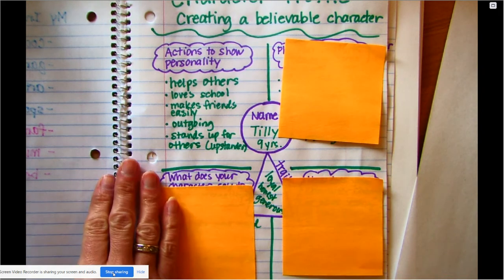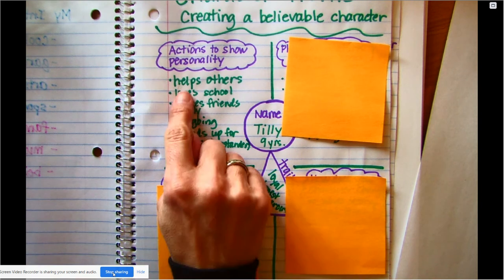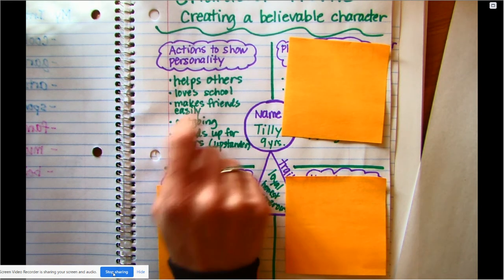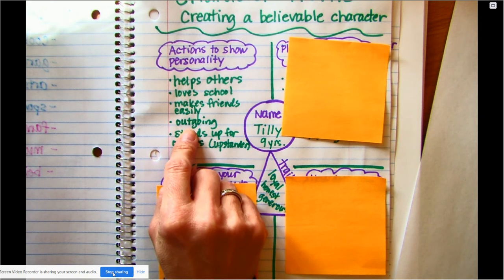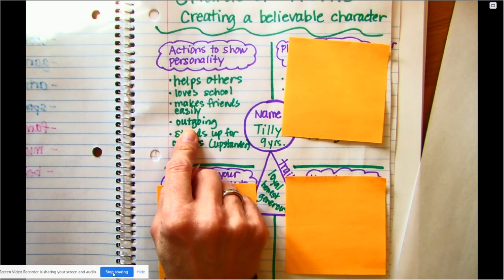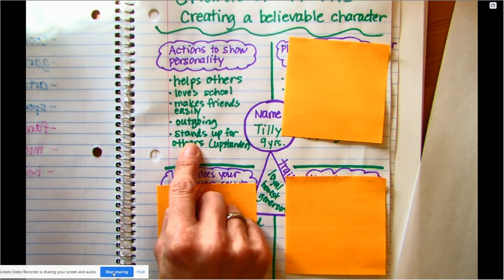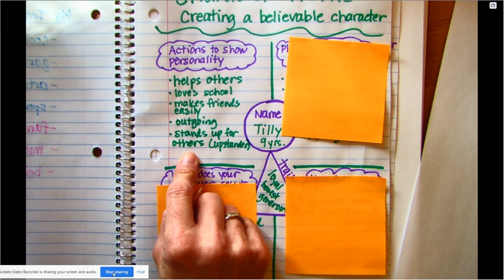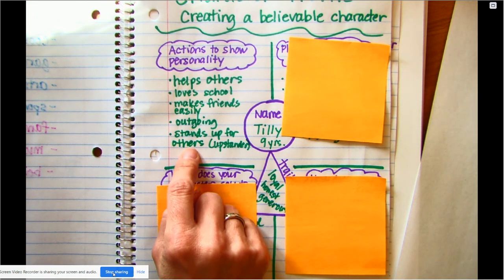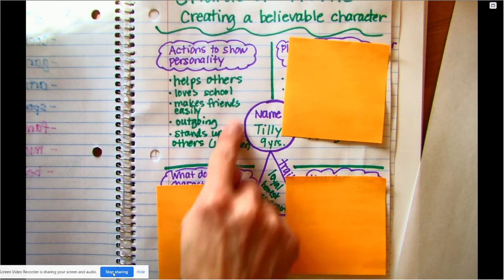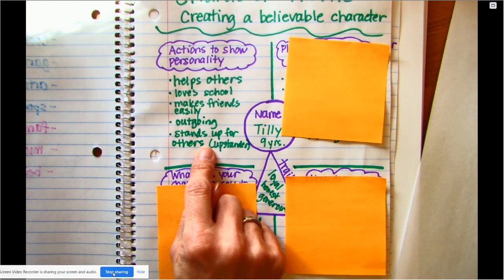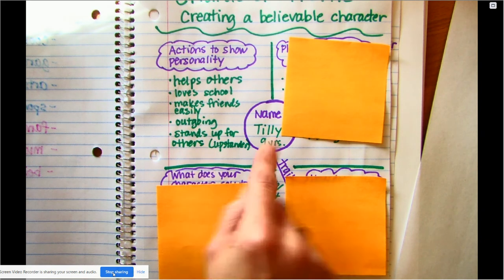Actions to show personality. What's character like? What do they do? How do they behave? I've decided that Tilly is somebody who likes to help others. She loves school. She makes friends pretty easily. She's pretty outgoing. That means she's not afraid to participate in class. She likes to raise her hand. She's not shy. She's quite the opposite. She also stands up for others. We call those upstanders. Somebody who does not do that is a bystander. They just stand by and watch. So Tilly is an upstander. You bet you know somebody like her that stands up for other people and comes to their defense.